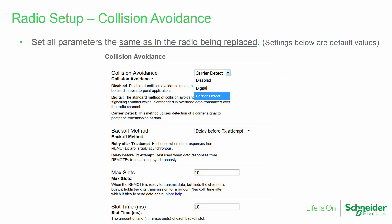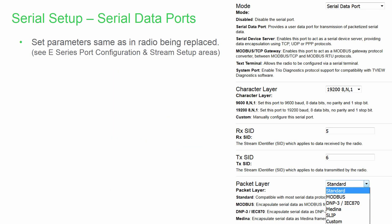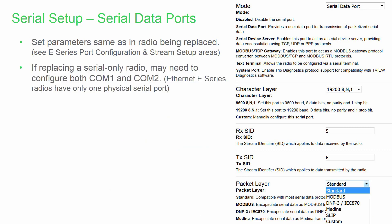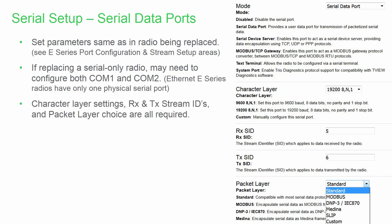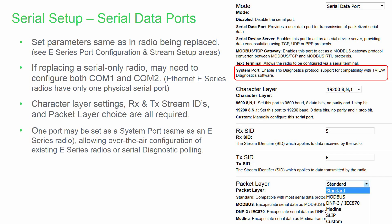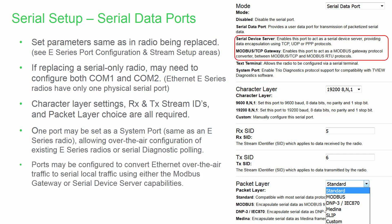The parameters for collision avoidance should be set the same as in the radio being replaced — note that the values shown are examples only. Digital collision avoidance is somewhat more common in systems with a full-duplex repeater, while carrier detect is typical in systems without a full-duplex repeater. The serial data ports should be configured the same as in the radio being replaced. If replacing a serial-only radio, you may need to configure both ports, while Ethernet E-Series have only one serial port. The most common selection will likely be serial data port. Configuration of the character layer settings, receive and transmit stream IDs, and packet layer choice are all required. One port may be set as a system port, allowing over-the-air configuration of existing E or M radios or serial diagnostic polling. Alternately, ports may be configured to convert Ethernet over-the-air traffic to serial local traffic using either the Modbus gateway or serial device server capabilities.